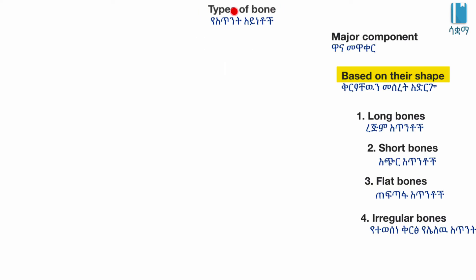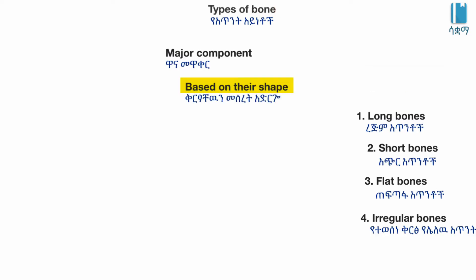Types of bone. Our bones are the major component of our skeletal system. Based on their shape, they are divided or categorized into four types.